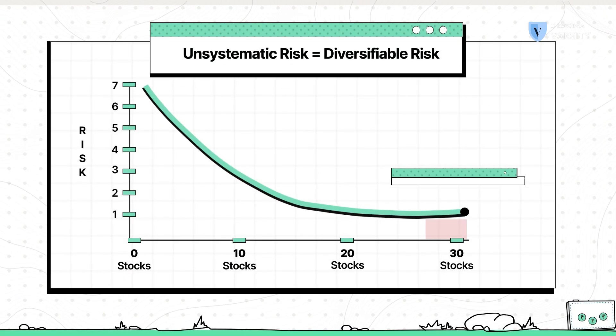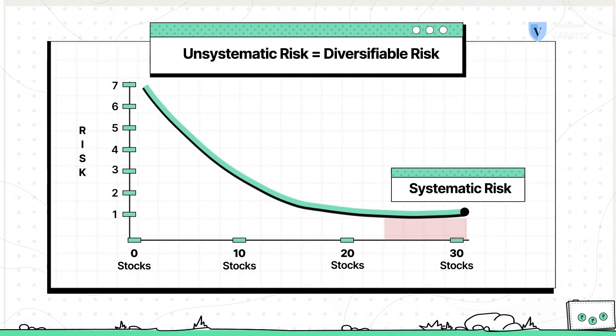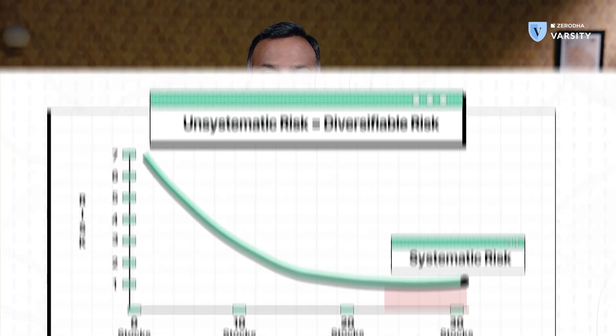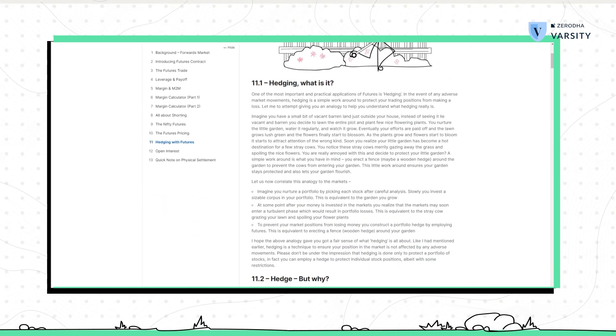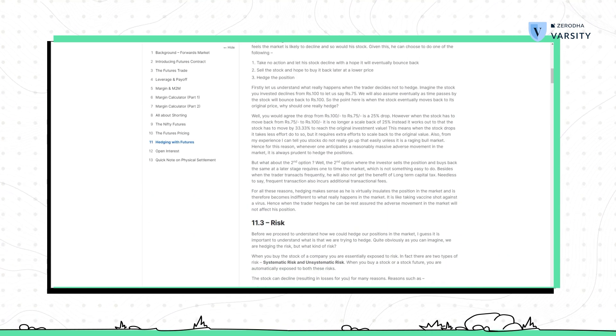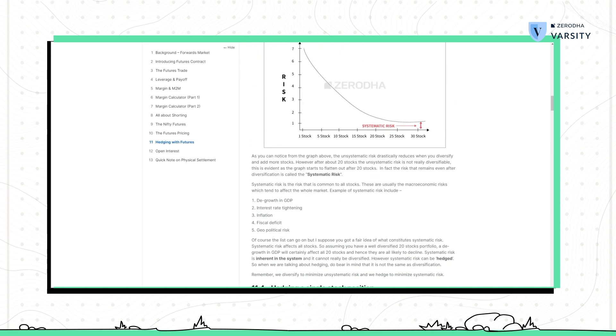By the way, the risk that still exists after you perfectly diversify your portfolio is called systematic risk. Systematic risk cannot be diversified — it can only be hedged. In this chapter of Varsity, I have described how you can hedge your portfolio and eliminate systematic risk. Do give it a quick read.